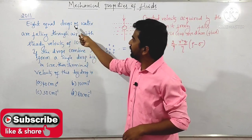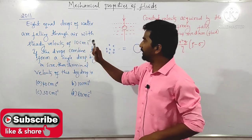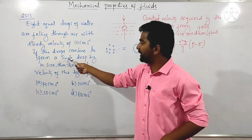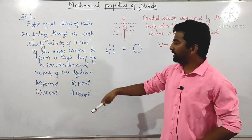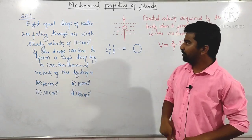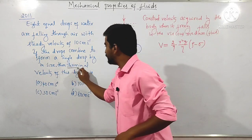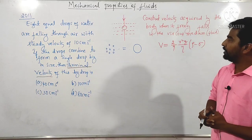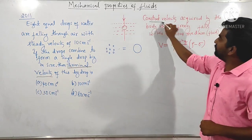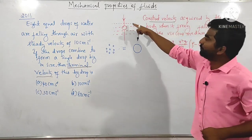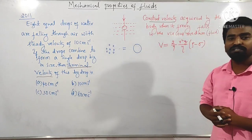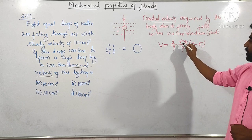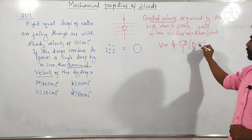Next question asked in 2011: 8 equal drops of water are falling through air with a steady velocity of 10 centimetres per second. If the drops combine to form a single bigger drop, what will be the terminal velocity of this bigger drop? Terminal velocity is a constant velocity acquired by a body when it freely falls through a viscous fluid medium.